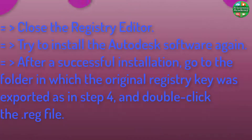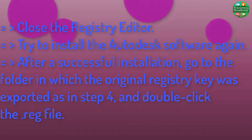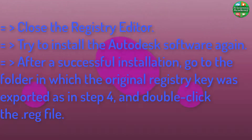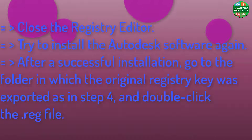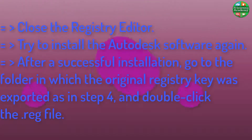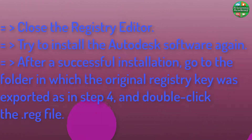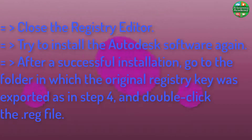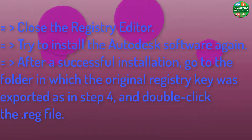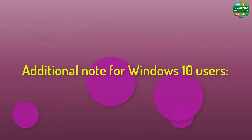Step 7: Close the Registry Editor. Step 8: Try to install the Autodesk software again. Step 9: After a successful installation, go to the folder in which the original registry key was exported as in Step 4, and double-click the .reg file.